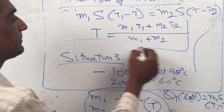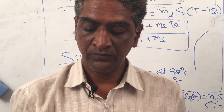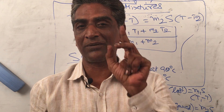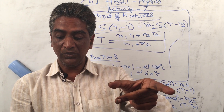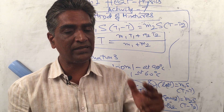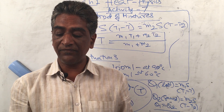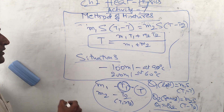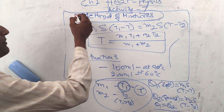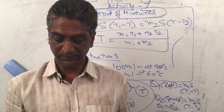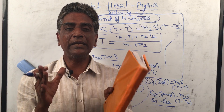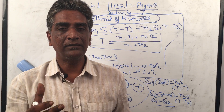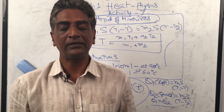You will notice that the temperatures of the mixtures in situation two and situation three are not equal. Can you guess the reason for this? You can also find the temperature of the mixture using a thermometer. This is the concept of the Method of Mixtures. Our next topic will be how to experimentally determine the specific heat of a solid — we will see that in the next lesson. My name is Narendra Kumar and we are from Narendra Academy. Thank you so much.